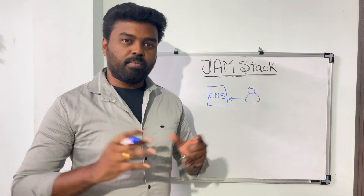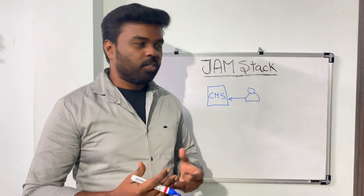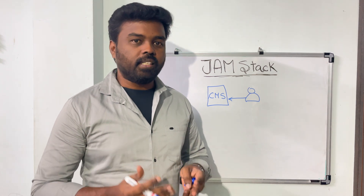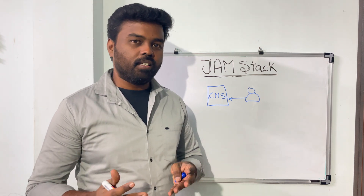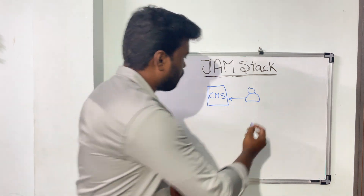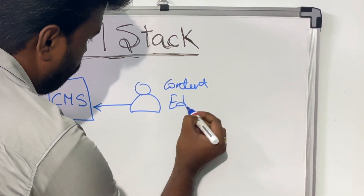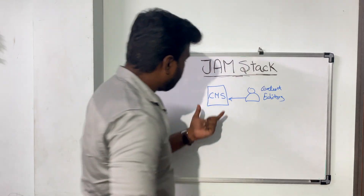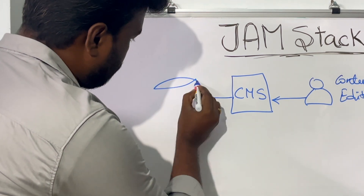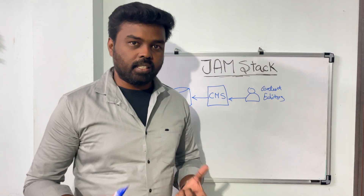We may have many products and a lot of categories for those products. The content editors need to feed all that data into the system — the list of products, the pricing, and the stock availability. All that information will be fed into the CMS by the content editors. This data will then be stored in a data store, which could be a MySQL or SQL Server based database.